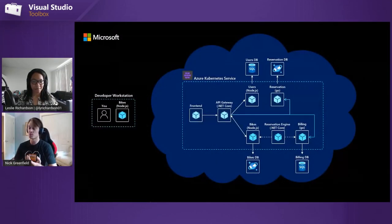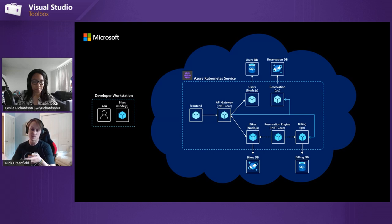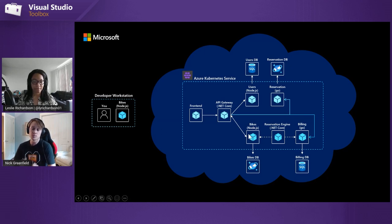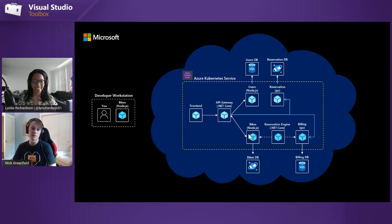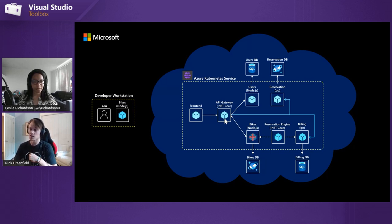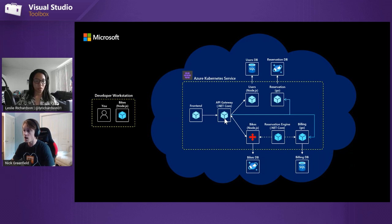At a high level, when you are using Bridge to Kubernetes, you are only responsible for running the one microservice on your development workstation. Taking that example, I have the Bikes microservice open — one of the back-end APIs. The first thing you'd do is create a connection to your cluster. Once that connection is made, you can pick from all the available services running in the cluster which one you want to work on locally. You can also pick multiple microservices if you have different instances of VS or VS Code open.